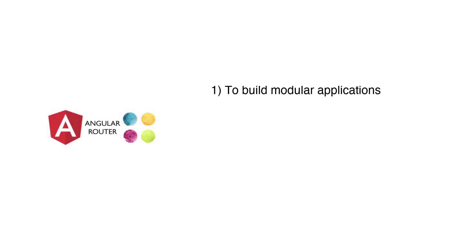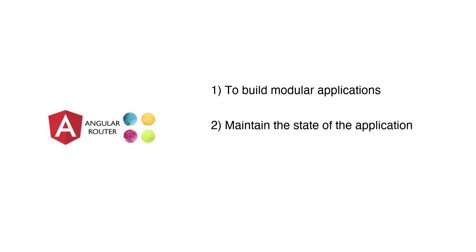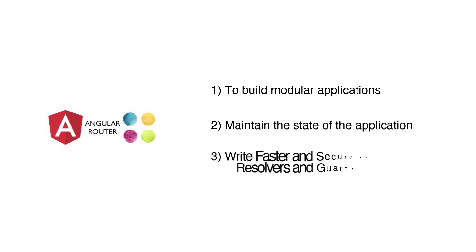Now let's look at why routing is so important. It helps us build modular applications, it helps us maintain the state of the application — which means that in the previous URL we saw slash search and q equals something, those were the states of the application. Third, it allows us to write faster and more secure code with resolvers and guards. Sometimes when you go to an application without logging in, it doesn't even load the page and straight away takes you to the login page — that is the use of guards. Resolvers are used so that even before the page is loaded, the content for that page has already been loaded in memory.